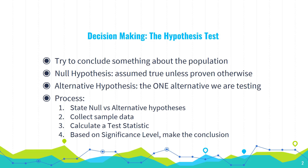And then we put up next to it an alternative hypothesis. We're going to see if the data that we collect support the alternative hypothesis. It doesn't mean that we're proving the alternative hypothesis true. If the data collected is really not in line with our null hypothesis, then we throw out the null hypothesis and adopt the alternative hypothesis. That's the idea.